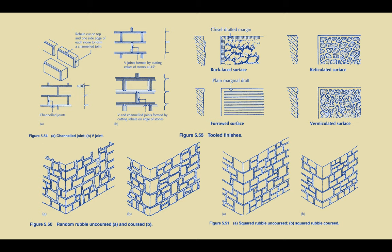Other forms of stone walling include polygonal walling. We do not need to pay much attention to flint walling, but we should understand what ashlar masonry joints are, including edge cuts to form channeled or V-joints which emphasize the shape of each stone. This kind of focusing on the joints and the stone as an aesthetic formula also leads us to recognizing the different kinds of tooled finishes that are used in stone construction.